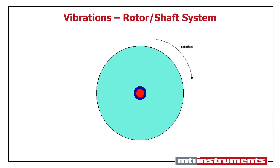In an ideal world, we have the center of mass of the rotor — where we assume all of the weight is centered, colored in red in this diagram — located on the axis of rotation, colored in blue. In this case, there's no imbalance in the system, and therefore no vibration caused by a non-centered center of mass.